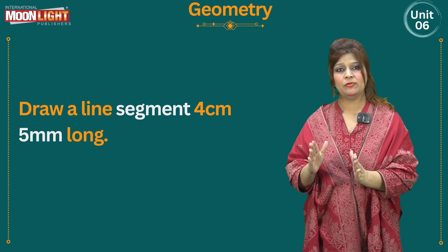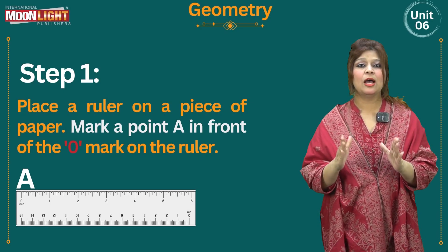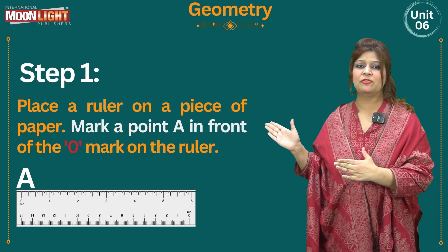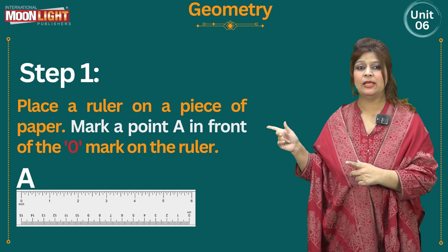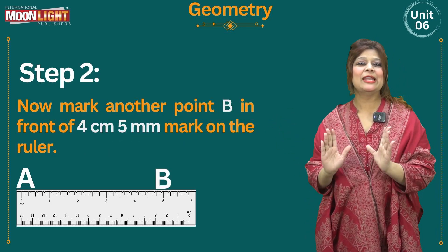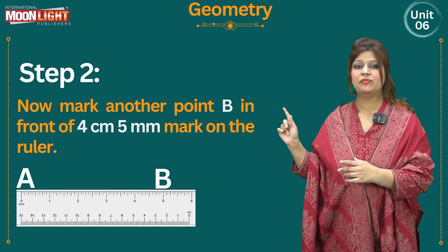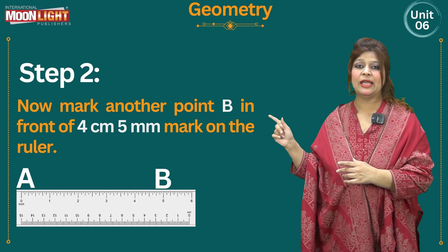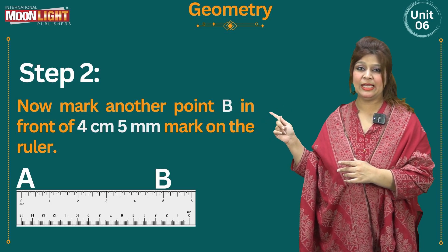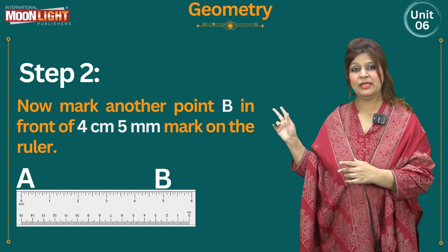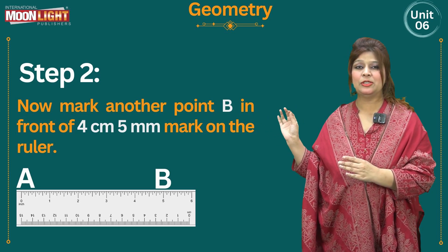This line segment can be represented as 4.5 cm or 4 cm 5 mm. Place a ruler on a piece of paper and mark a point A in front of the 0 mark on the ruler — mark it exactly here. Now mark another point B at exactly 4.5 cm — that means after 4 cm, find the small lines; the 5th small line in the middle of 4 and 5 cm will be 4.5 cm, or 4 cm and 5 mm. Put the dot there.